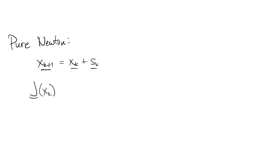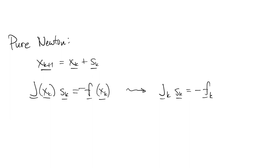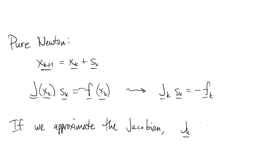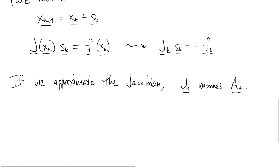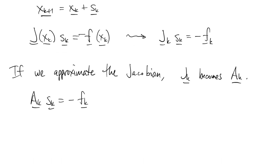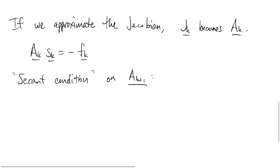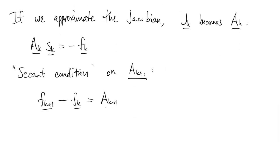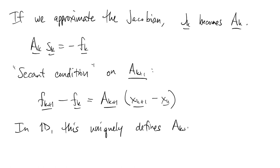Here's the pure Newton iteration once again. We're looking for the step sk which satisfies a linear system of equations. If we approximate the Jacobian by finite differences or any other method, instead of Jk we write Ak. We might also want to copy the secant method — the n-dimensional equivalent of the secant condition. In one dimension, that was enough to uniquely determine the approximate derivative — it was the slope of the secant line. But in n dimensions, this is not enough of a condition to make a unique definition.